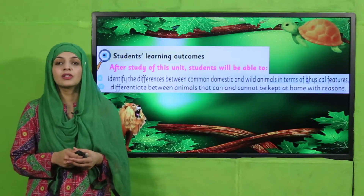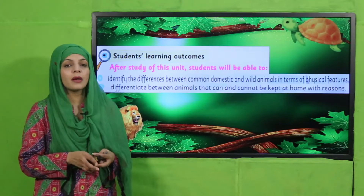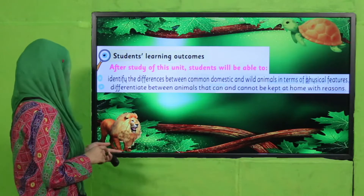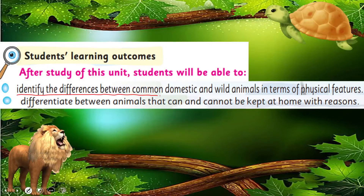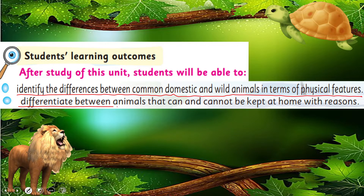My dear students, now is the time to have a look at today's student planning outcome. In today's lecture, students will be able to identify the difference between domestic and wild animals in terms of physical features. They will also be able to differentiate between animals that can and cannot be kept at home, with reasons.